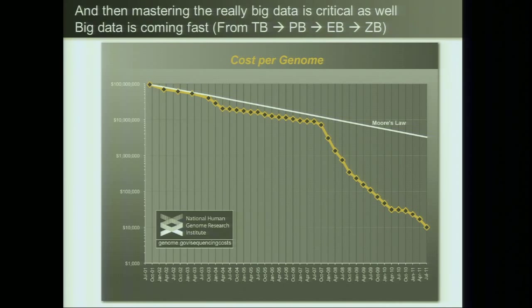Here is a curve of the cost of genome sequencing over the last decade plus. The white line is a Moore's law curve, and you're seeing the cost of sequencing drop at a super Moore's law rate. That's driving this revolution of being able to generate data on unbelievable scales.